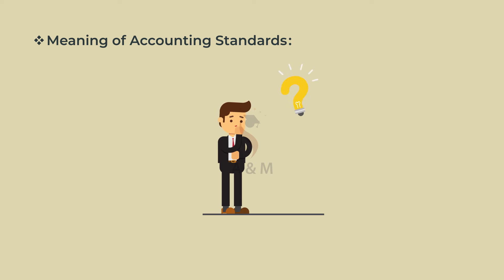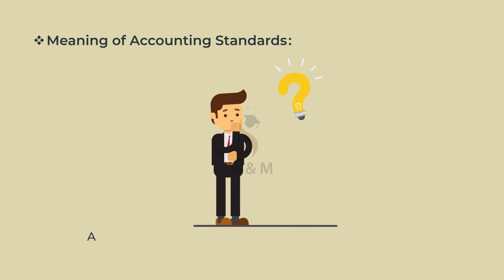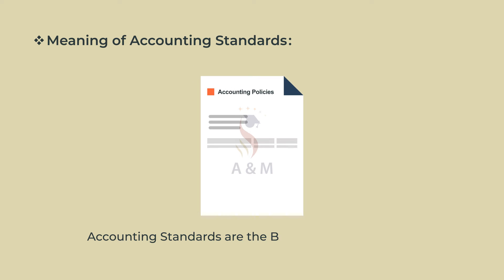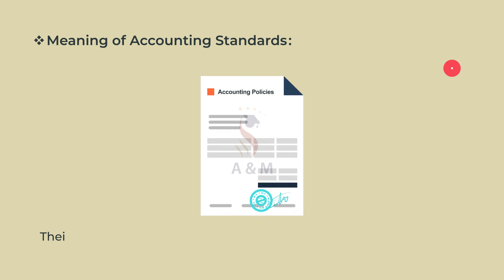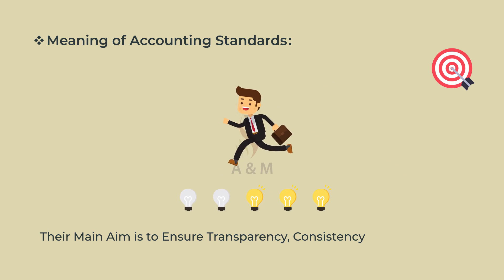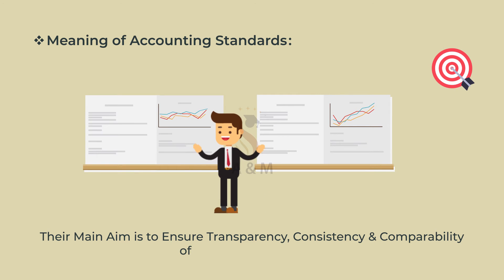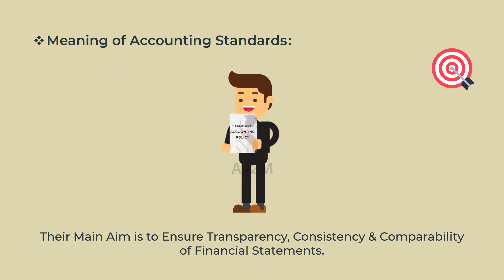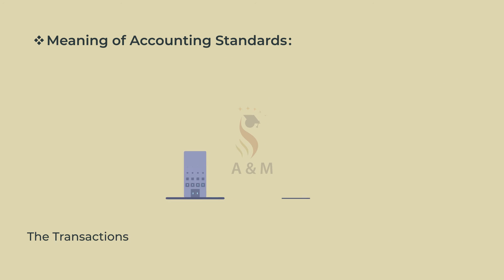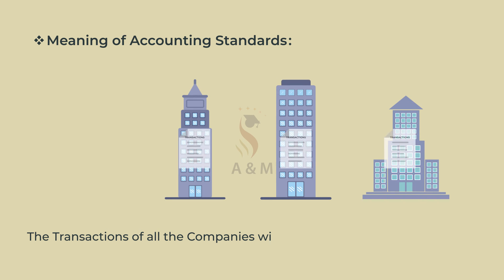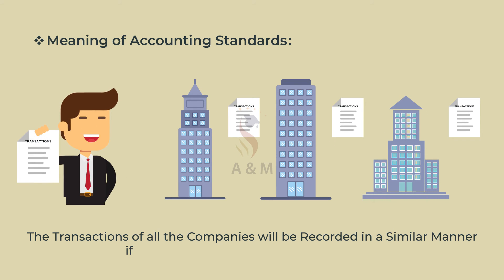What exactly is an accounting standard? Accounting standards are the basic policy documents. Their main aim is to ensure transparency, consistency, and comparability of financial statements. They do so by standardizing accounting policy and principles of the country, so the transactions of all the companies will be recorded in a similar manner if they follow these accounting standards.